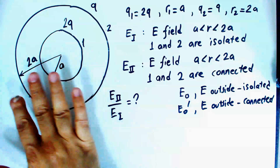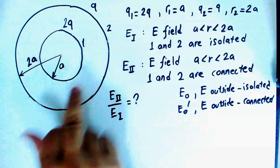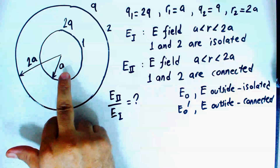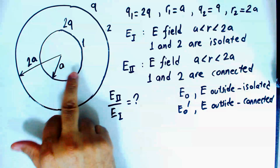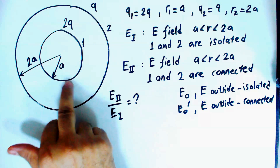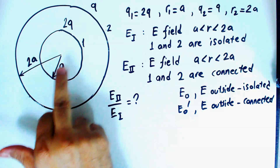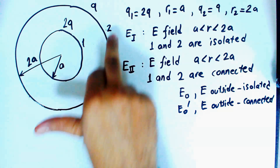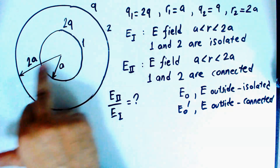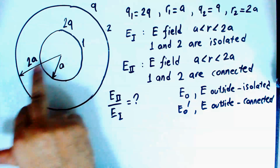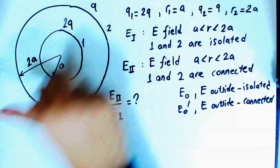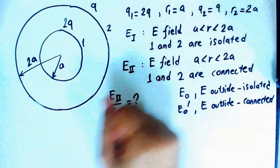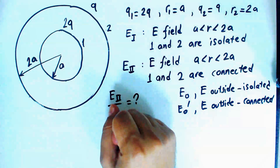We have two conducting spherical shells. They are concentric — they share a common center. The inner shell has a radius a and a charge of 2q, while the outer shell has a radius of 2a and a charge of q. These are the radii and the initial charges of these two spheres.